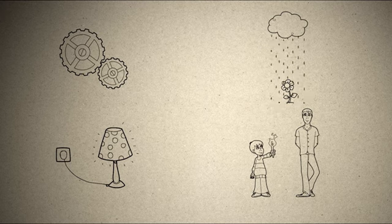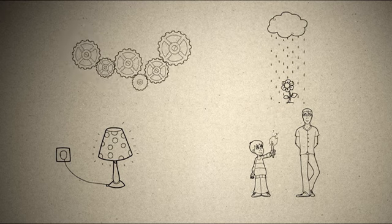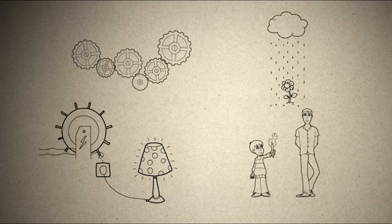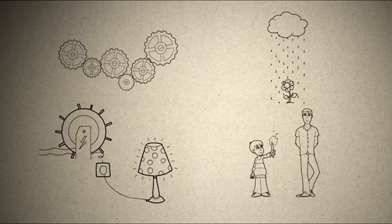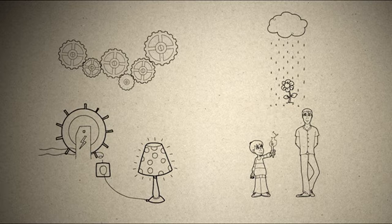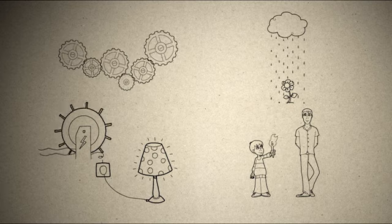It is easy in the case of the gears. We just add more of them. In the case of the lamp, we can add a river and a hydroelectric power plant. The river turns the turbines, which are connected to the generators, which generate electricity, which lights up the lamp.